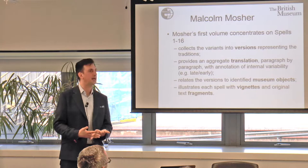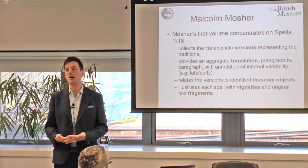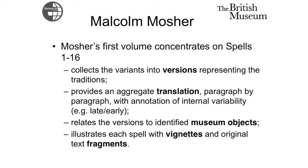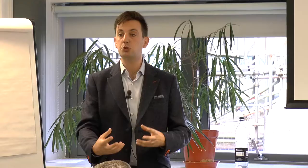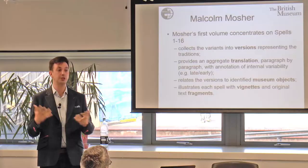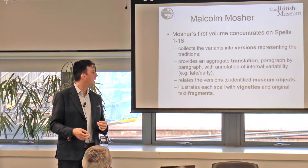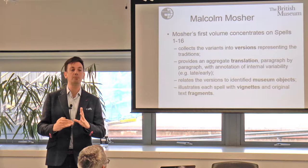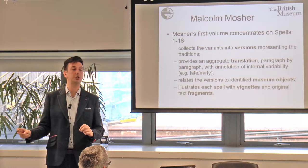The work we're supporting is a digital edition of the manuscript of Malcolm Mosher, who in his first volume looks at spells 1 to 16 and groups each spell into a set of versions representing different variants — different traditions. The number of versions changes between spells, but each version is fixed to some objects used in composite to produce a common translation — Mosher's modern translation. What we have is spells 1 to 16 in several versions for each spell, and a pointer to objects used to reconstruct each version, primarily at the British Museum, the Louvre and the Getty.